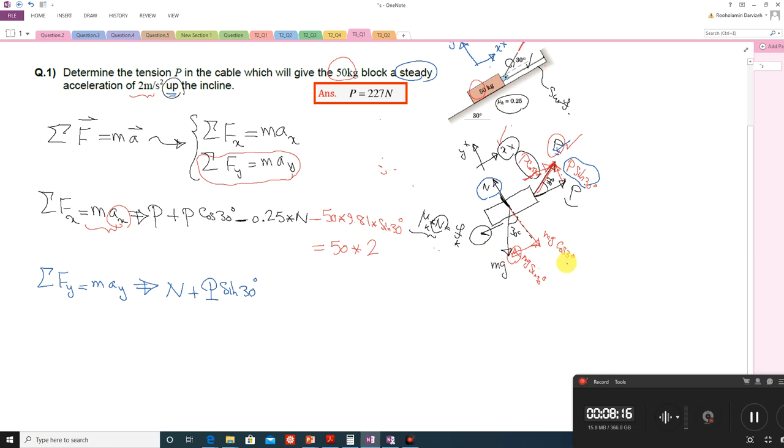And we have the vertical component of the weight which is negative, minus mg, minus 9.81, cos 30° equals to—we assume the object doesn't separate from the surface. It means we don't have any more motion or movement in vertical direction. When you don't have any movement in y direction, which means your acceleration is zero, equals to zero.